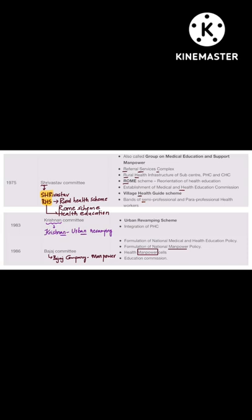Then come the other three committees: Shrivattsav, Krishnan, and Bajaj. Shrivattsav Committee has 'SHR' in the beginning — reverse it to read 'RHS': R for Rural Health Scheme, H for rural health infrastructure, H for health education commission, H for health guide (village health guide), and S for semi-professional and para-professional health workers. Krishnan sounds like 'urban', so Krishnan is for urban revamping.